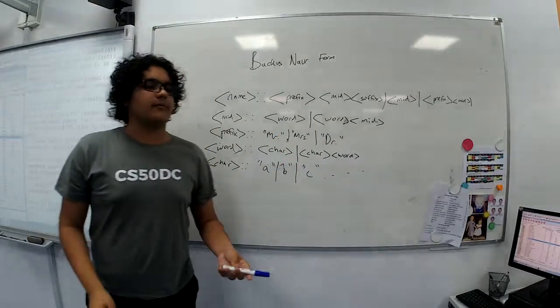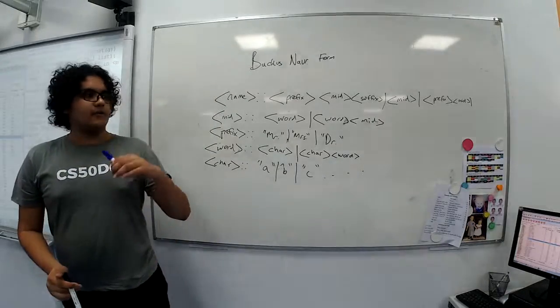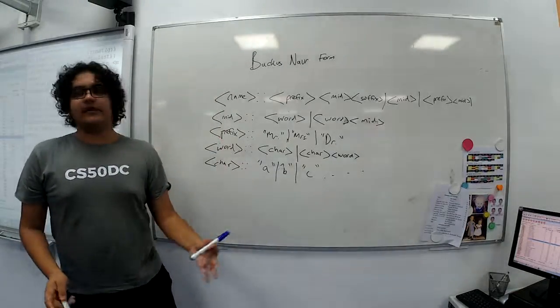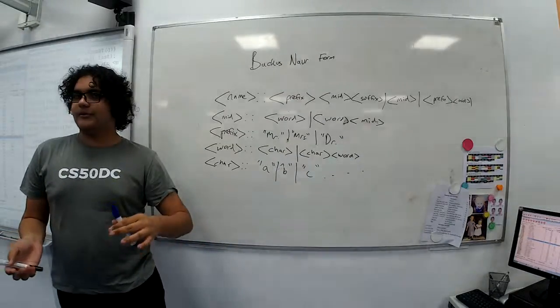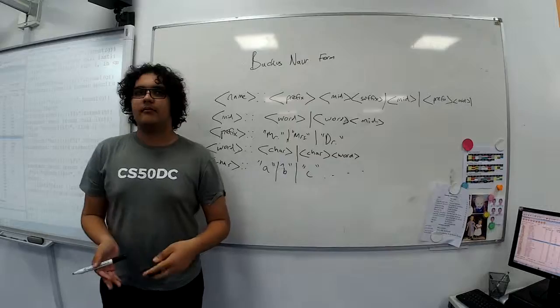And this is why Backus-Naur form is kind of more useful than finite state machines for defining languages. So that's basically these two topics that are kind of linked, but they're also quite separate. And their uses are quite different. And we will cover them more thoroughly later.